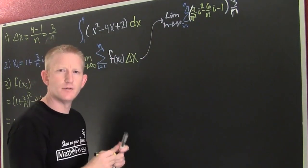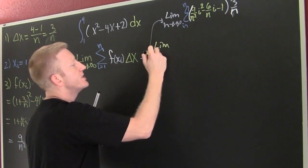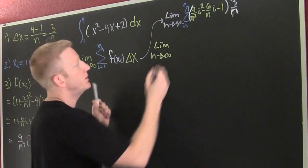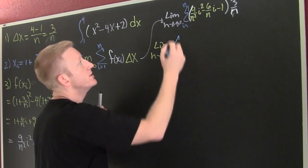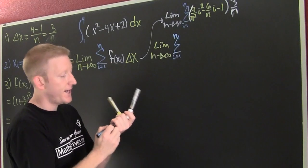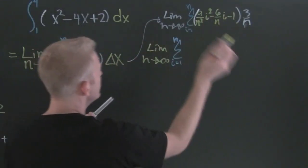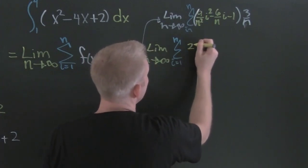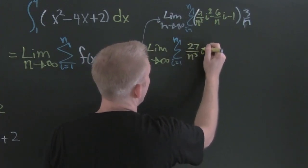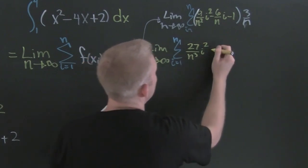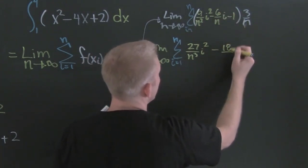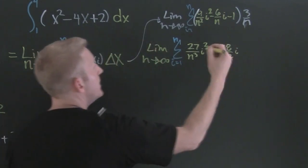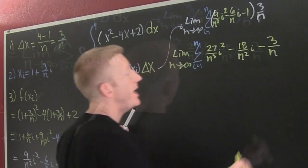Let's distribute delta x in so we don't forget about it. This will be the limit as n goes to infinity, sum i equals 1 to n of: 27i²/n³ minus 18i/n² minus 3/n.